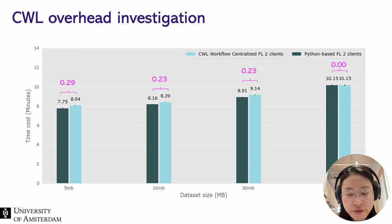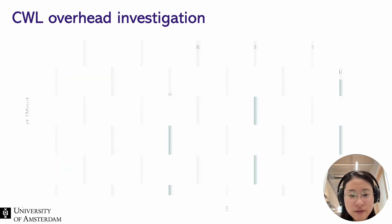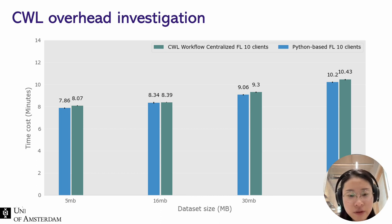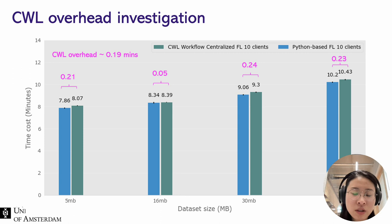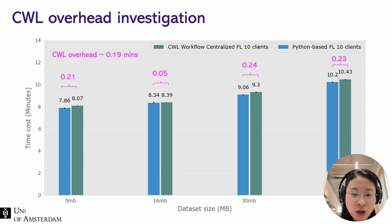In the centralized federated learning scenario, comparing CWL and Python-based implementation, the CWL overhead in the two-client scenario is around 0.18 minutes, and in the ten-client scenario the CWL overhead is still around 0.19 minutes. So the average CWL overhead is relatively stable, very small, and the time overhead of using the CWL implementation can be considered negligible.